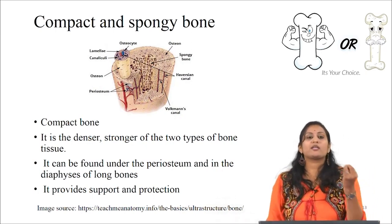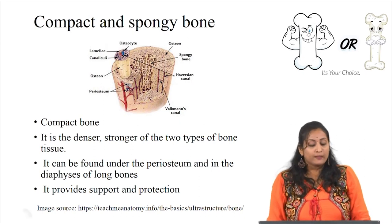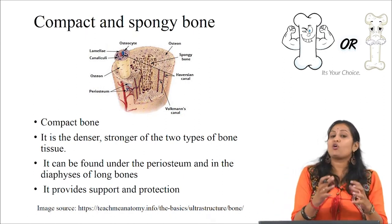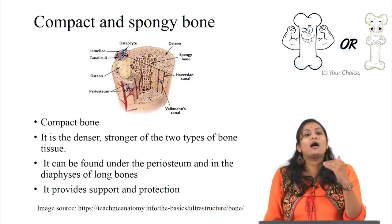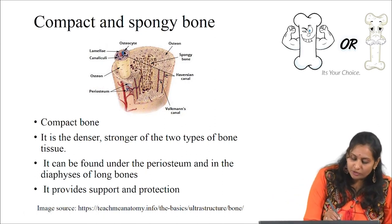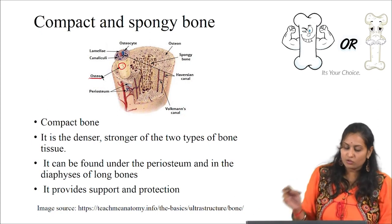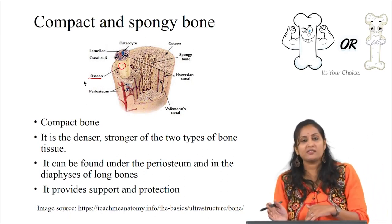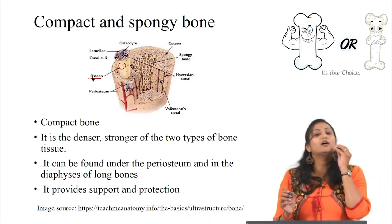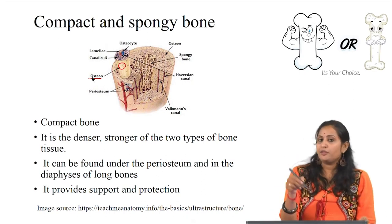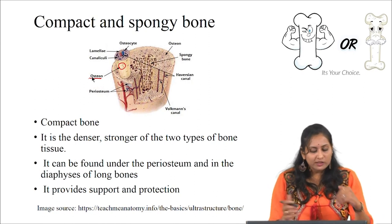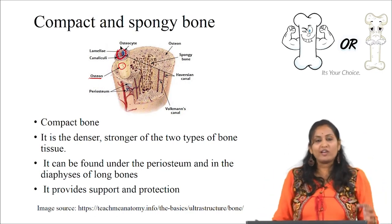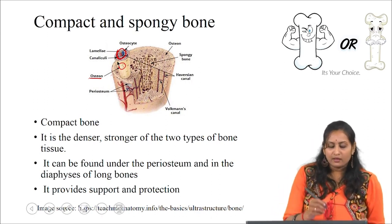The details of compact and spongy bone are best explored through histology. Compact bone is the stronger of the two; it gives support and protection and is found under the periosteum and in the diaphysis of long bone. The microstructural unit of compact bone is called an osteon, also called the Haversian system. Each osteon is made up of concentric rings of calcified matrix called lamellae. Running through the center of the osteon is the central canal — also called the Haversian canal — which contains blood vessels, lymphatic vessels, and nerves.